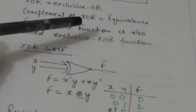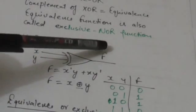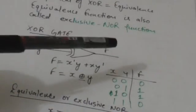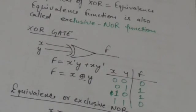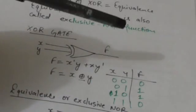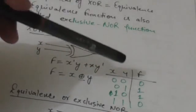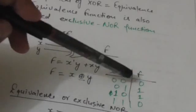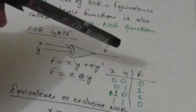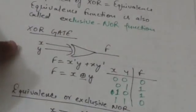This is the gate which implements the exclusive OR function, and here is its truth table. X and Y are the inputs and F is the output. The value of this function will be 1 if only one of them — either X or Y — is equal to 1. If both are 0, or if both are 1, the value of the function would be 0.